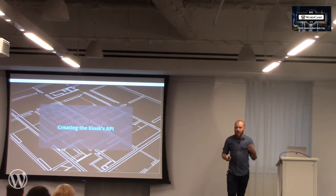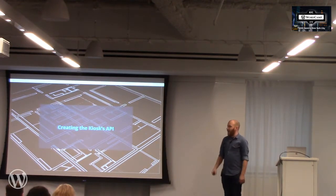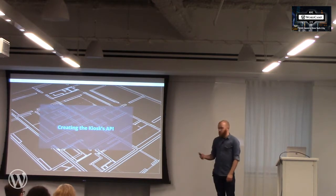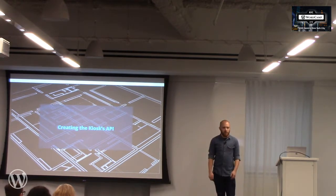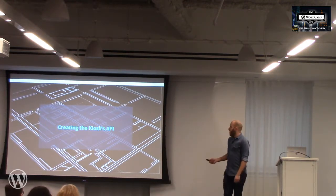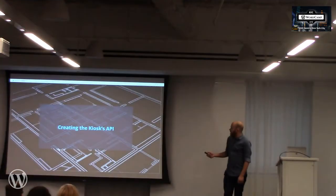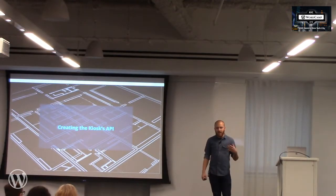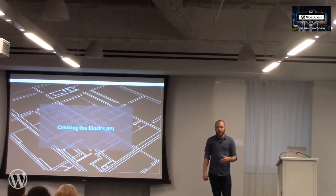The next step was to create the API for the kiosk. The built-in WordPress REST API got us a lot of the way there, but we needed to add on a little bit — adding data for videos and sets so that those would expose some additional settings.